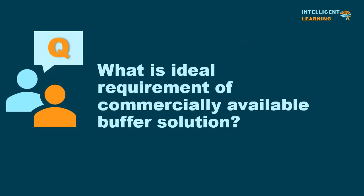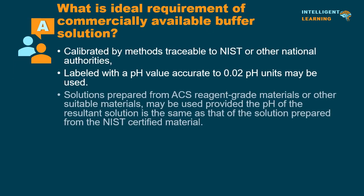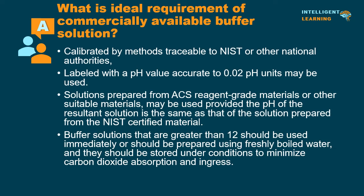What is the ideal requirement of commercially available buffer solutions? Commercially available buffer solutions for pH measurement systems should be calibrated by methods traceable to the National Institute of Standards and Technology or other national authorities, and labeled with a pH value accurate to 0.02 pH units. Solutions prepared from ACS reagent grade materials may be used provided the pH matches that of the NIST-certified solution. Buffer solutions greater than pH 12 should be used immediately or prepared using freshly boiled water, and stored under conditions to minimize carbon dioxide absorption and ingress.